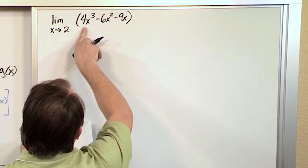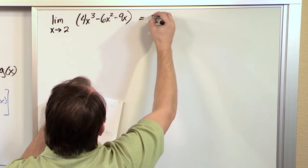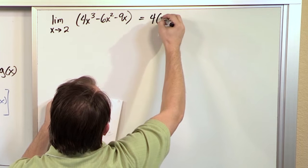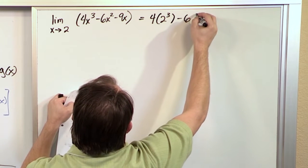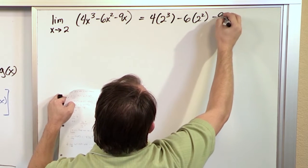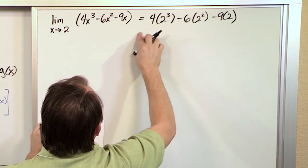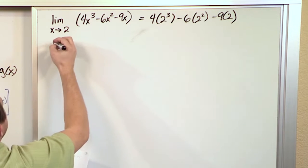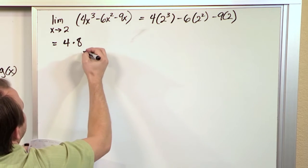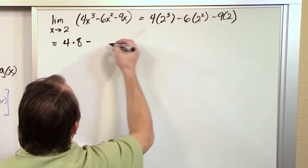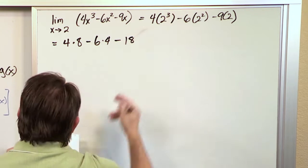So whenever I take the limit of each individual thing, I'm essentially going to be plugging in values. So what I'm going to have is 4 times 2 to the 3rd, and then I'm going to have minus 6 times 2 squared minus 9 times 2, like this. And so ultimately, I'm going to have 4 times 8, and then minus 6 times 4, minus 18, since 9 times 2 is 18.